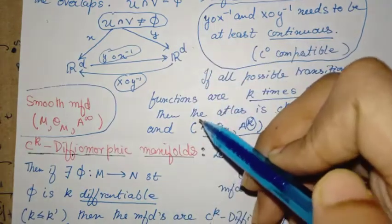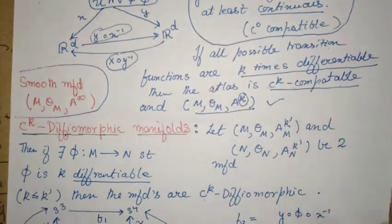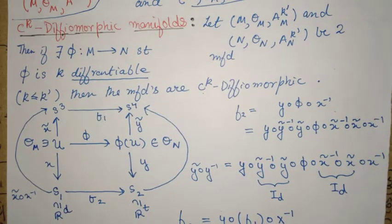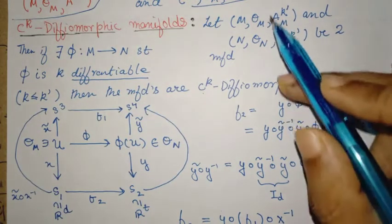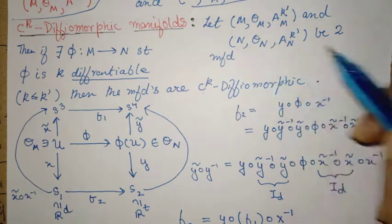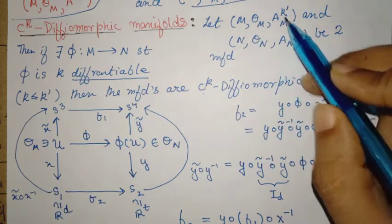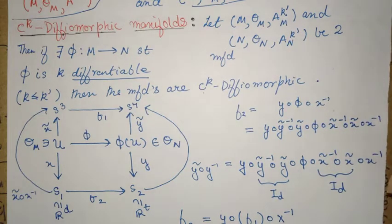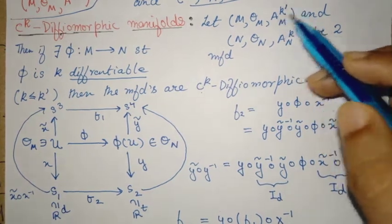So if this would have been R^N, then the manifold would have been of dimension N. So given that, I can talk about diffeomorphic manifolds. So what does that mean? Given two manifolds, M, theta M, N, theta N, and their charts which are C^k compatible - that means the transition functions can be differentiated k' times.